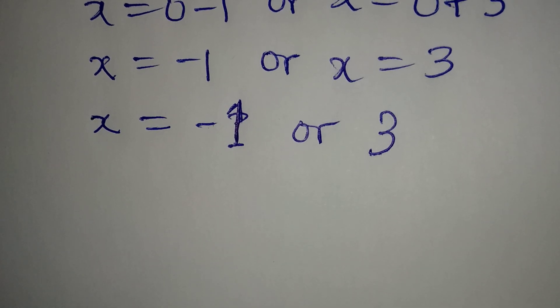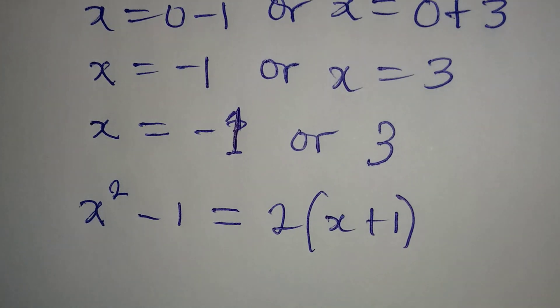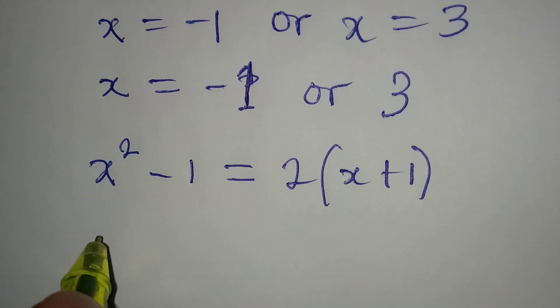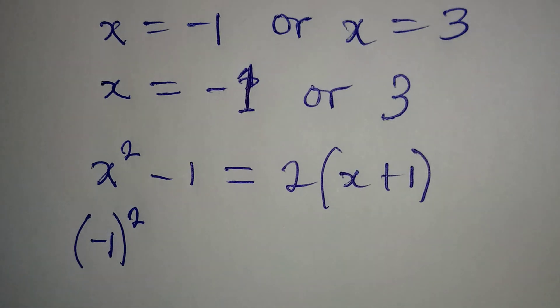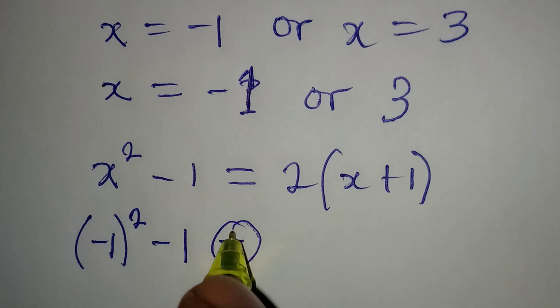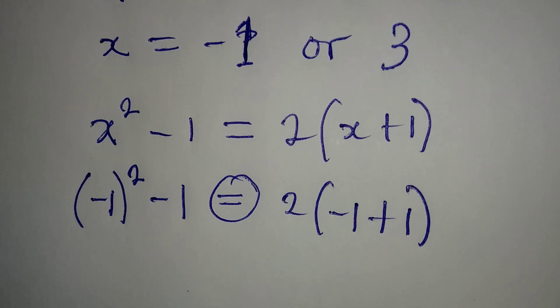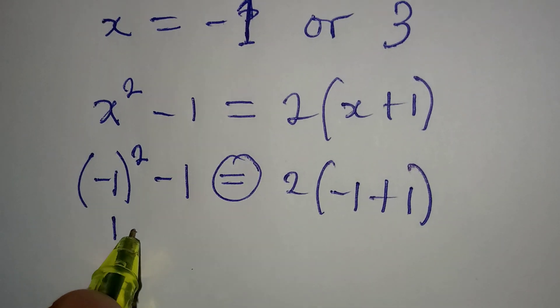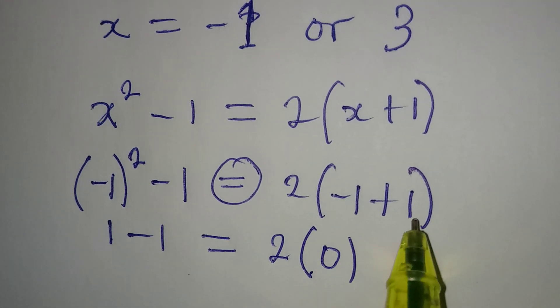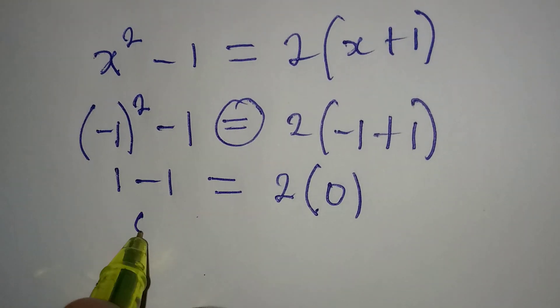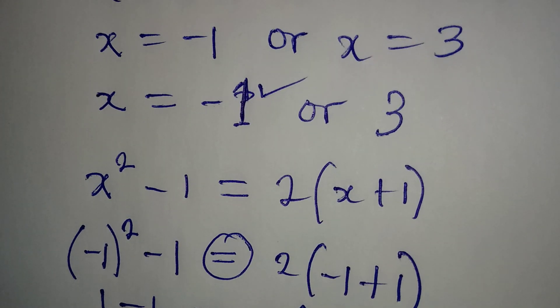I would like us to check for the two values of x. We have x squared minus 1 equal to 2 into x plus 1. Now if I use minus 1 as the value of x, then I'll be having minus 1 squared - you will be making a mistake if you do not put this in brackets - then we have minus 1. Will this be equal to 2 into minus 1 plus 1? Minus 1 squared is 1, then we have minus 1, and it is equal to 2 times 0 which is 0. So x equal to minus 1 satisfies the equation.